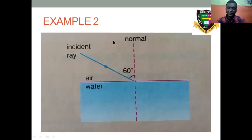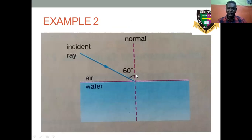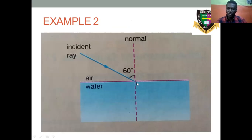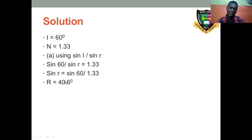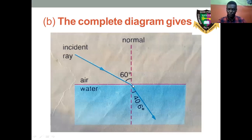Example 2: The figure below shows a ray of light incident at an angle of 60 degrees to the normal. The question asks to find the angle of refraction and complete the diagram. Solution: angle of incidence i = 60°, refractive index n = 1.33 for the glass. Using sin i over sin r: sin 60 over sin r = 1.33. Make sin r the subject of the formula — you get a decimal fraction. Then find the arc sine of that fraction to get the angle of refraction.